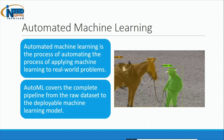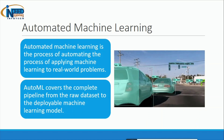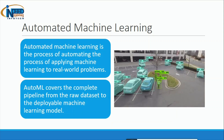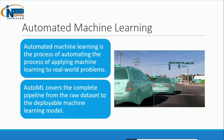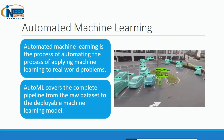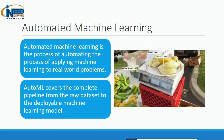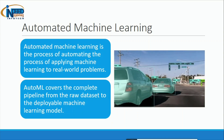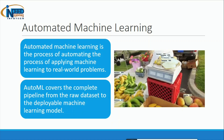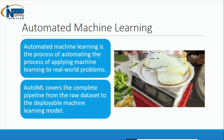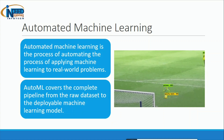Automated machine learning is the process of automating the process of applying machine learning to real world problems. Real world problems can be identifying an object, distinguishing between different objects, identifying the distance between two objects, classifying some objects, or clustering of some objects.